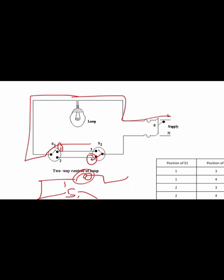In the third case, line to lamp, lamp to switch S1 which is connected to position two, then two to four, connected to S2 — we have a closed path, so the lamp will glow. In the fourth case, when S1 is at position two and S2 is at position three, from two to four but S2 is at three, giving an open circuit, so the lamp will not glow.